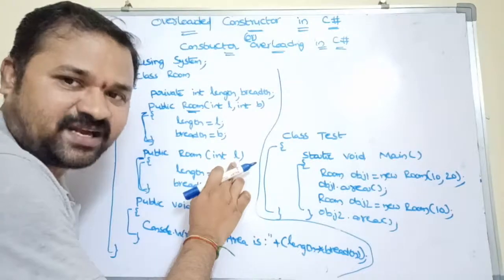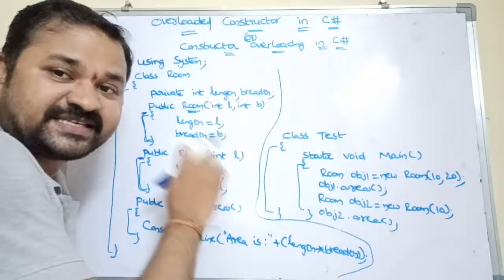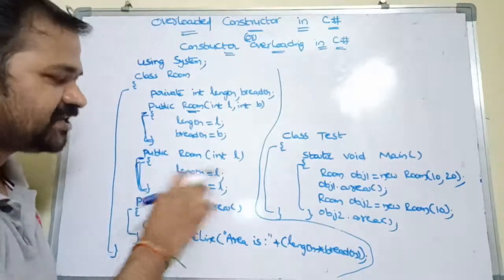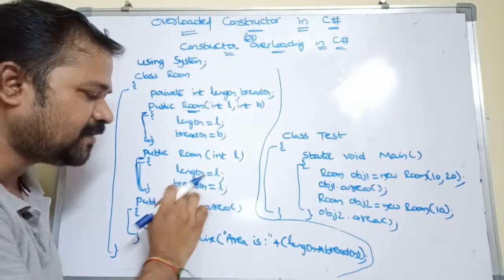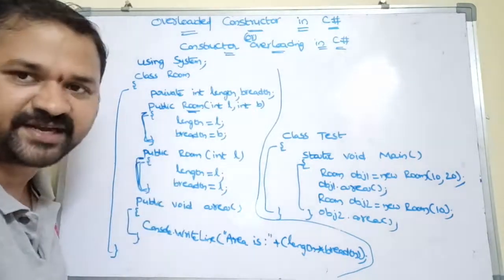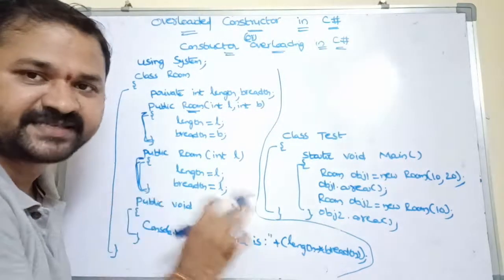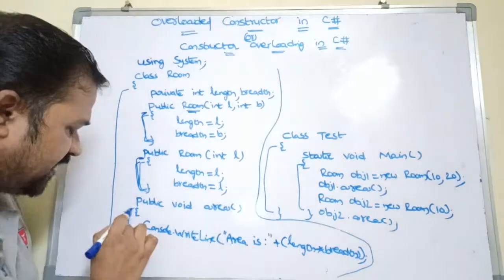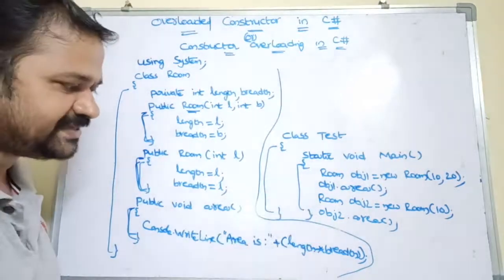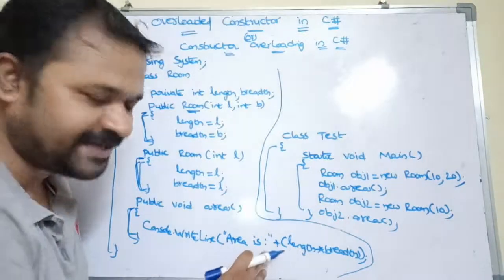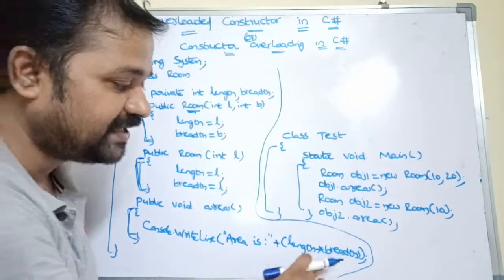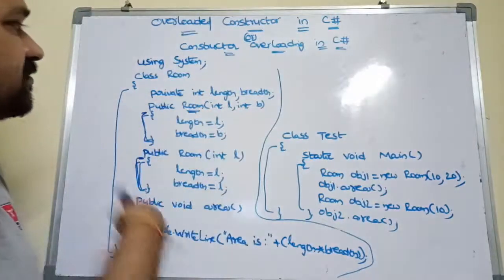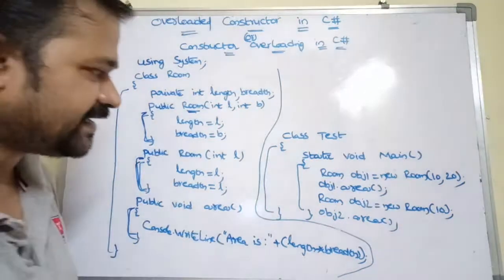Now the second constructor: public Room(int l). This constructor contains only one integer argument. The initializations here are: length equals l, breadth equals l. Next is the area method, where we display the area by calculating it — Console.WriteLine("Area is " + length * breadth). That is the formula for area.